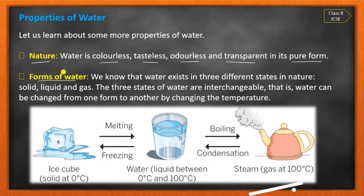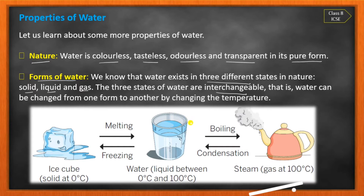The second property is the forms of water — its physical states. Water exists in three different states: solid, liquid, and gas. These three states are interchangeable. In solid form, water is ice at zero degree Celsius. If temperature increases, ice melts into liquid form at room temperature. At 100 degrees Celsius, liquid water converts into gaseous state — steam or vapour. So water can exist in 3 physical states: solid, liquid, and gas.